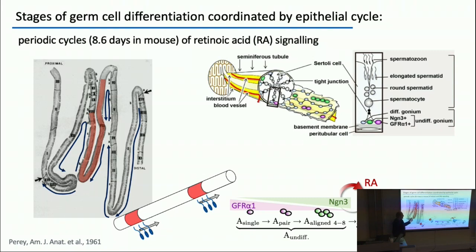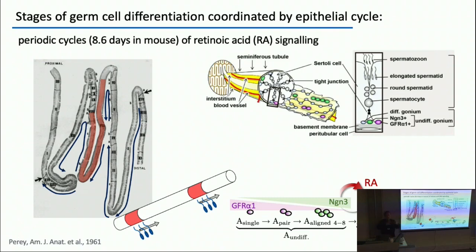The retinoic acid cycle is really the pacemaker coordinating all stages of germline development. But this retinoic acid cycle is not synchronized across the tubules — it moves as a phase wave along the tubules, like a Mexican wave in a stadium where the people aren't moving but you see the wave move.